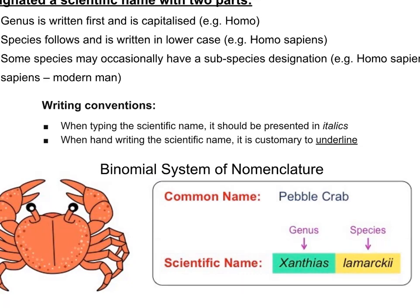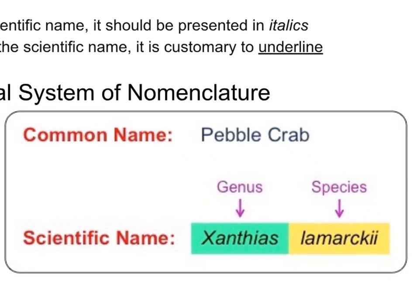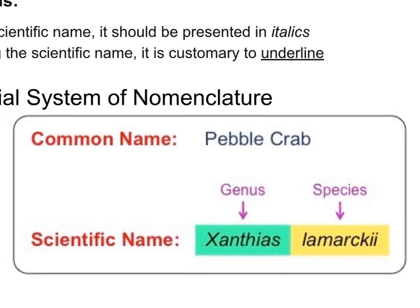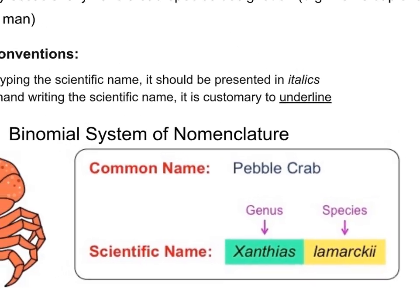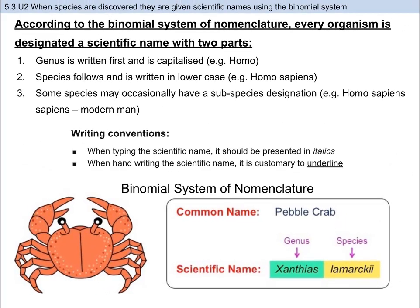Every organism is given a scientific name, and each scientific name has two parts. The first part is the genus — in this case Xanthius — and the second part is the species, lamarckii. Another organism with a recognizable scientific name is humans, or Homo sapiens. This two-part naming convention is called binomial nomenclature and uses Latin as its basis.